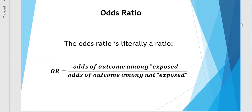The odds ratio is named odds ratio because it is literally a ratio. The formula for an odds ratio is the odds of an outcome in the numerator and the odds of an outcome in a denominator, so that it is literally an odds ratio.